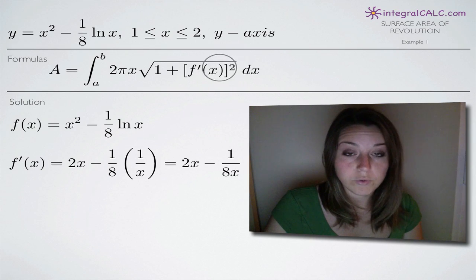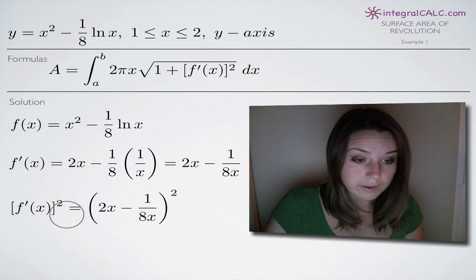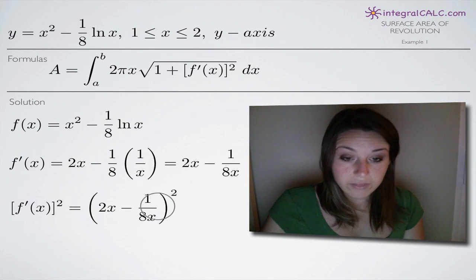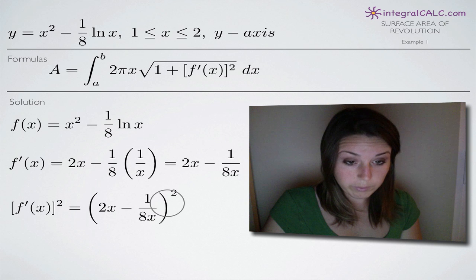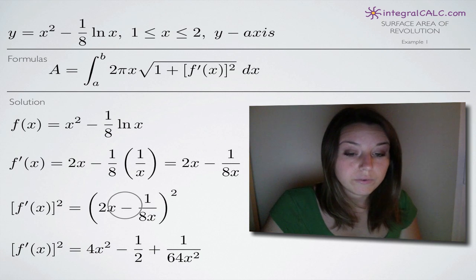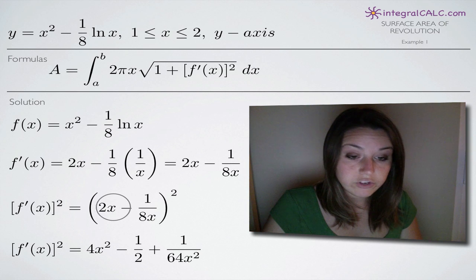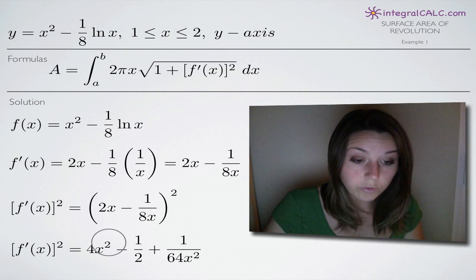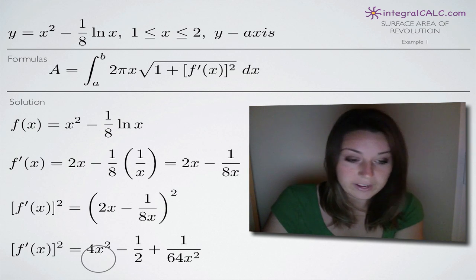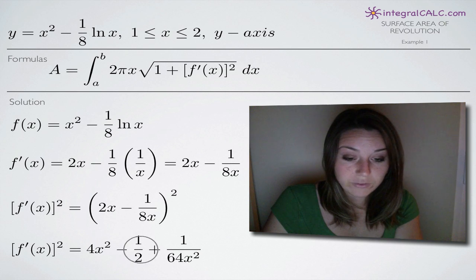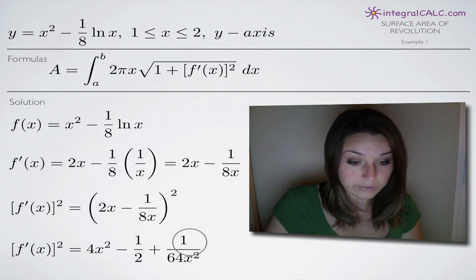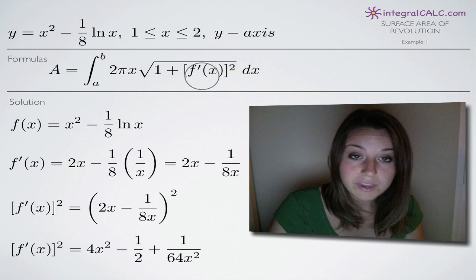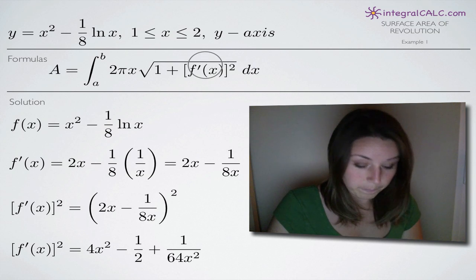Now let's square f prime of x before plugging it into the formula. We square both sides, so we have 2x minus 1 over 8x, times another 2x minus 1 over 8x. When you FOIL everything together, you get 4x squared minus one-half plus 1 over 64x squared. This is f prime of x squared, and it matches exactly what we need to plug into the formula.